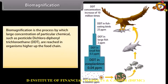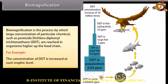Biomagnification is the process by which large concentrations of a particular chemical, such as the pesticide dichlorodiphenyl trichloroethane (DDT), are raised in organisms higher up the food chain. For example, the concentration of DDT is increased at each trophic level, as shown in the diagram.